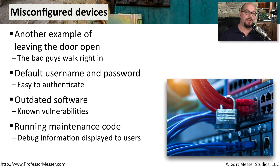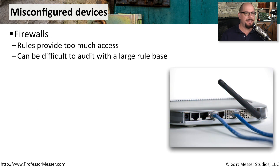Another misconfiguration might be running debug or maintenance code on a device — when that device is used, it provides the end user with more information than would normally be available, and that might give bad actors enough information to gain access to those systems. Another type of misconfiguration that might be difficult to identify is in a firewall. Some organizations might have hundreds or even thousands of rules in their firewall rule base, and it becomes difficult to perform an audit to know exactly what kind of traffic might be allowed through or blocked by the firewall.